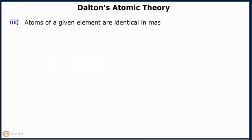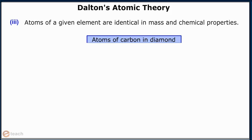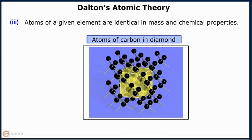Atoms of a given element are identical in mass and chemical properties. One example is atoms of carbon in diamond.